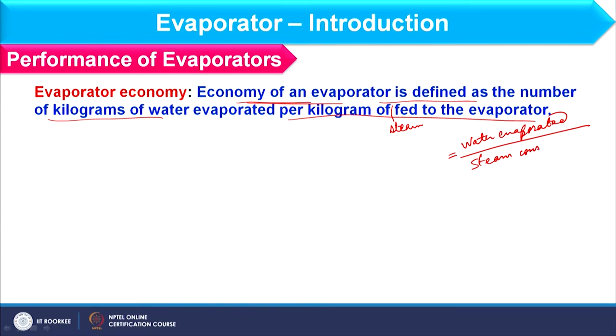Steam economy is a unitless quantity. For a single evaporator, the steam economy is usually 0.8 — meaning 80% of the steam provided is used to generate evaporation. That is basically the thumb rule. Now, if we ask what are the methods to increase the economy of the evaporator, the very first method is the use of a multiple-effect evaporation system.